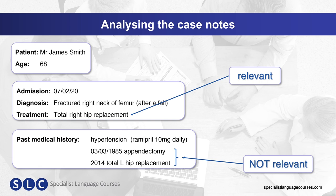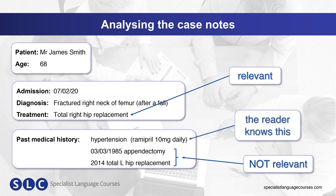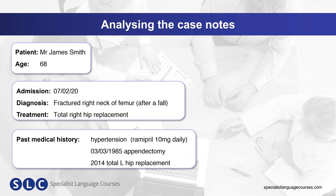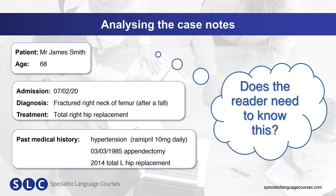Also, in this case, the patient's hypertension and medication — although it's an existing condition — does not need to be included because the reader already knows this. In the OET exam, there will always be irrelevant information included to distract you, so you need to continuously ask yourself: does the reader need to know this?